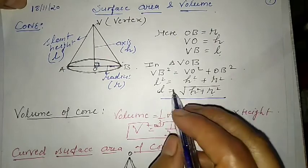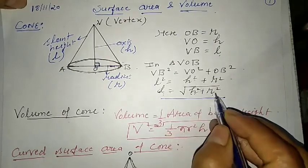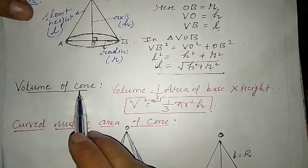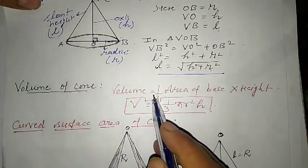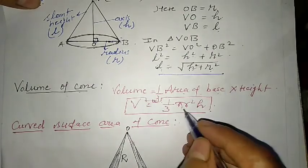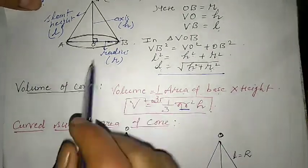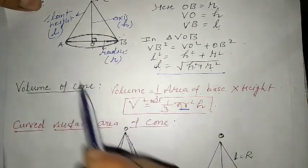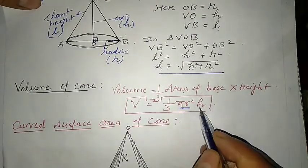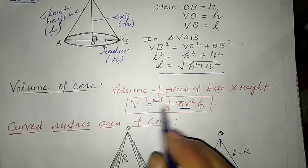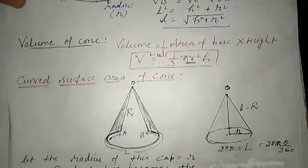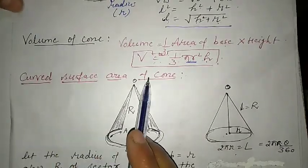If any one term is missing, we can find it using this formula. Now, the volume of the cone is equal to one-third times the area of the base, which is πr², multiplied by the height h. So Volume V = (1/3)πr²h. The next term is the curved surface area of a cone.